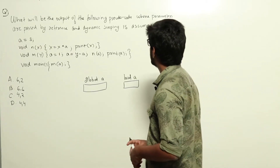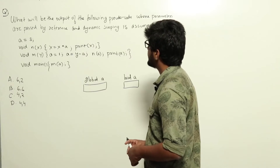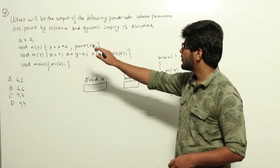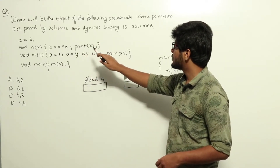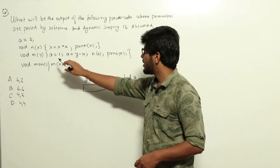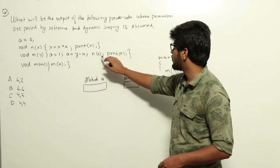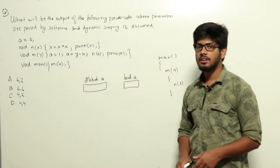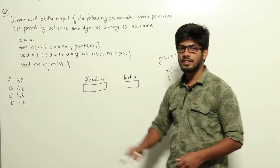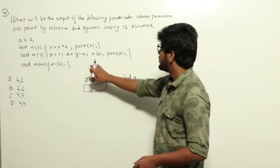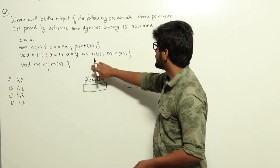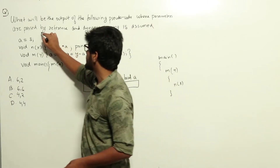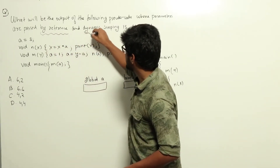What will be the output of the following pseudo code where parameters are passed by reference and dynamic scoping is assumed? The pseudo code given here is: a equal to 3, void n of x — x equal to x into a, print x; void m of y — a equal to 1, a equal to y minus a, n of a; print a; void main — m of a. Four options have been given and we need to find out which will be printed when this is run.